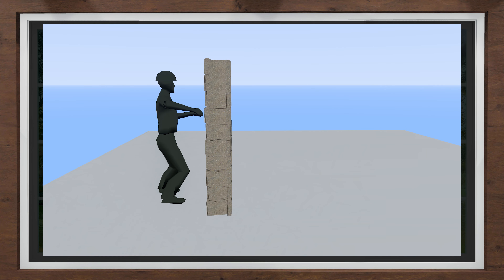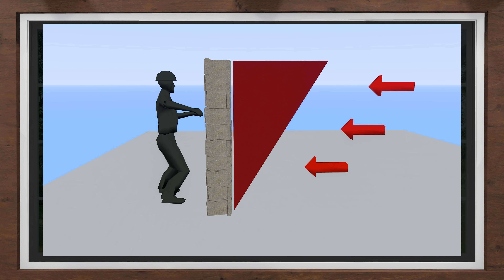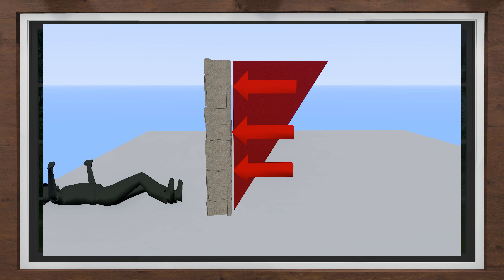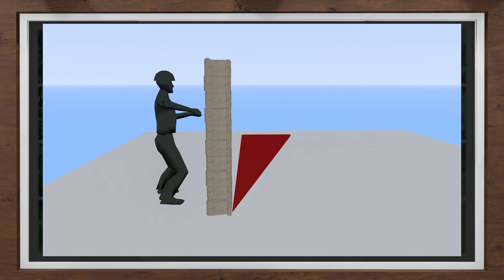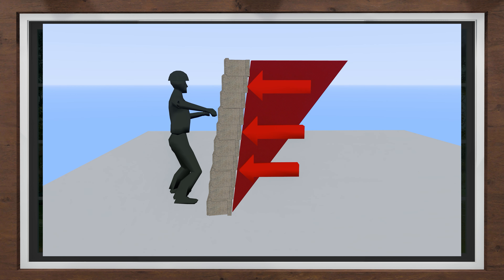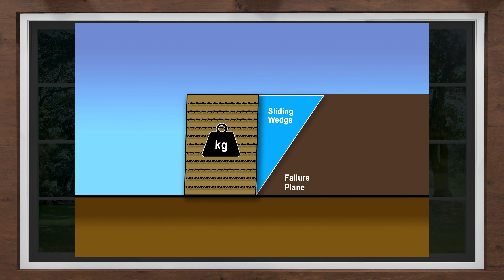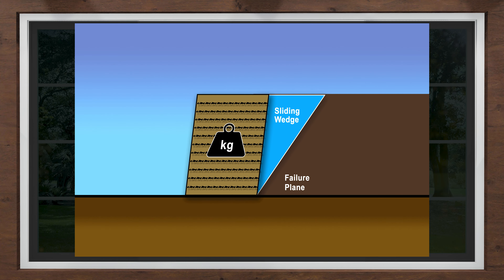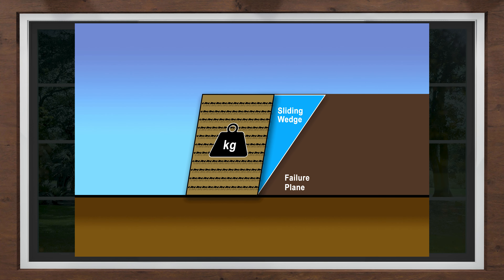Retaining walls that are built vertically have disadvantages over those built with batter. Consider how easy it would be to knock you over while standing vertically with your feet together — it wouldn't take much force to push you over. Then consider your advantage if you were leaning into the force; it would take a much larger force to knock you off balance. Wall batters reduce the sliding wedge pressure and take advantage of leveraging the force.